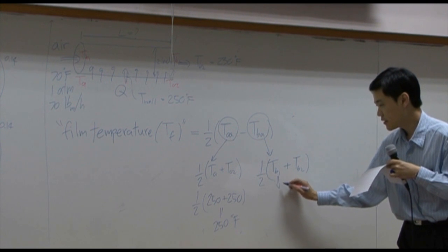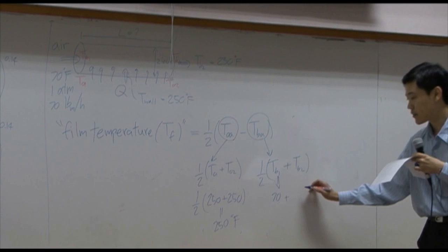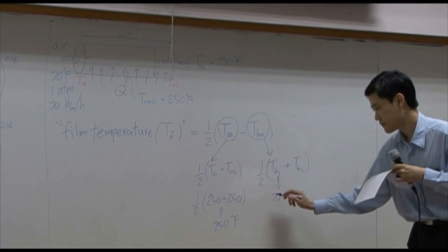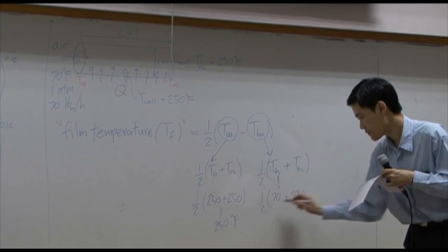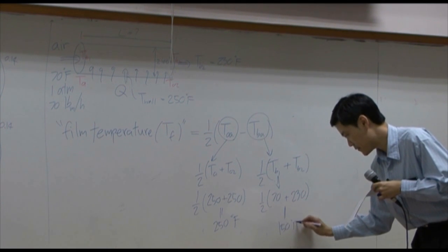For bulk temperature, input here is 70. For output, bulk temperature is 230. Half of that, you get 150 degree Fahrenheit.